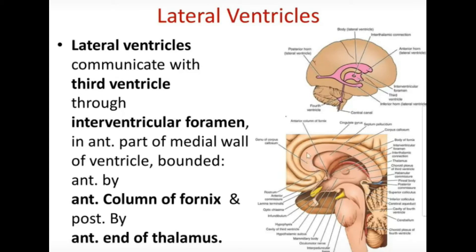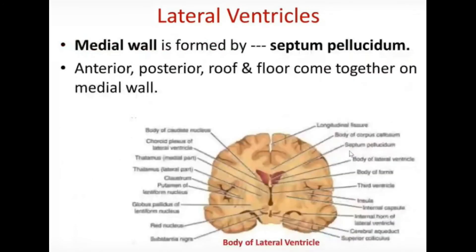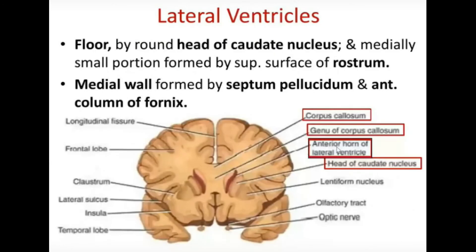The genu limits the anterior horn anteriorly, and the rostrum goes below, forming the floor of the anterior horn. The genu limits it anteriorly, and the remaining body of the corpus callosum forms the roof, which is continuous with the roof of the body of the lateral ventricle. The floor of the anterior horn of the lateral ventricle is formed by the rounded head of the caudate nucleus.